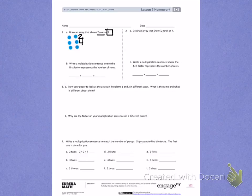3rd row of 2, which is 6. 4th row of 2, 8. 5th row of 2, 10. 6th row of 2, 12. 7th row of 2, 14.